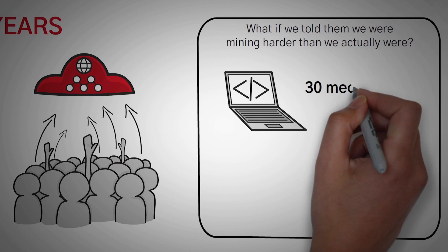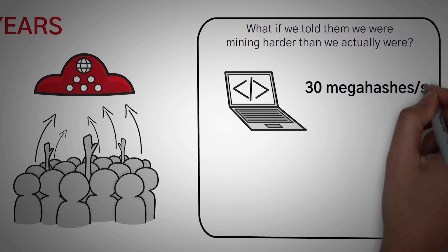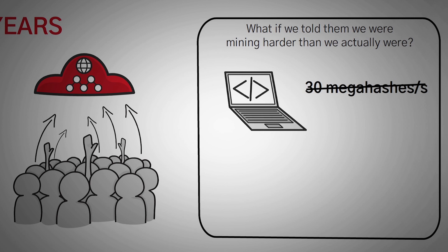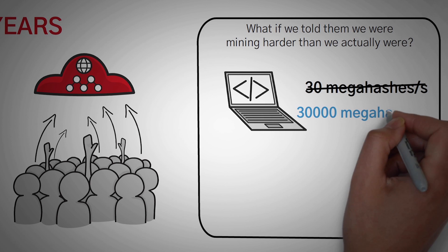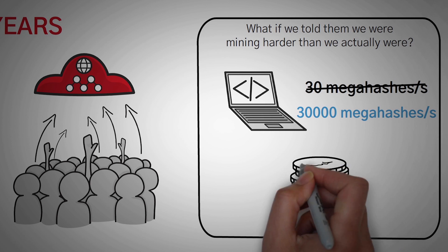For example, instead of mining at 30 megahashes a second, we could easily write a program that tells the pool we are mining at 30,000 megahashes a second and then get the majority of the block reward.